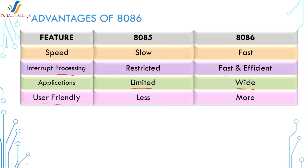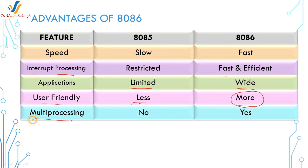The next advantage is the user-friendly feature: the 8086 is more user-friendly because it can do multiprocessing and can handle interrupts better than the 8085. The next advantage is multiprocessing itself: the 8086 can handle very big programs through multiprocessing in comparison to the 8085 processor, and that's why it is still in use in some embedded systems.